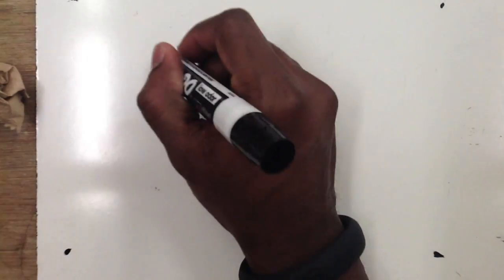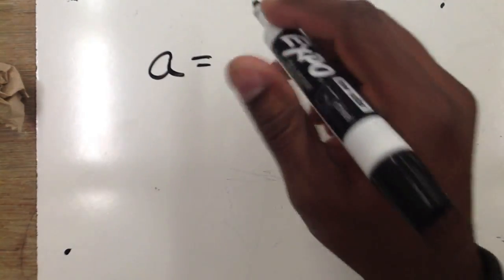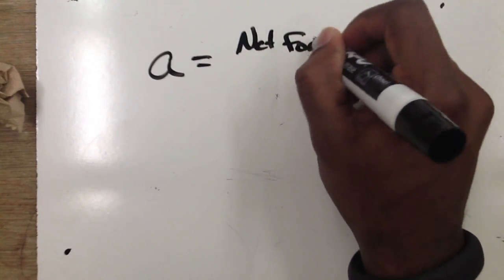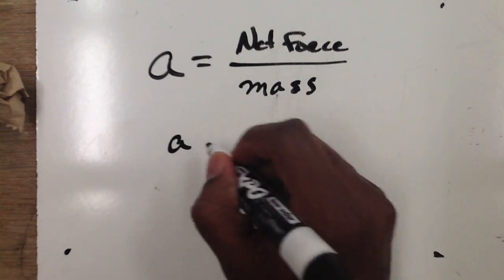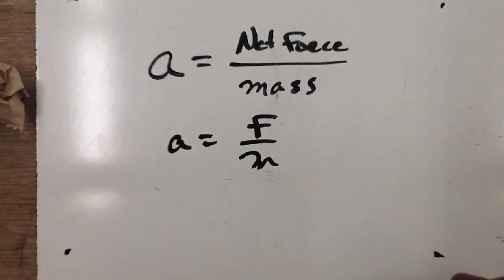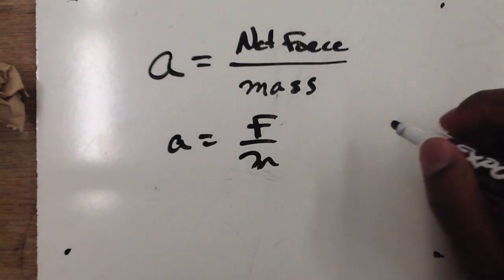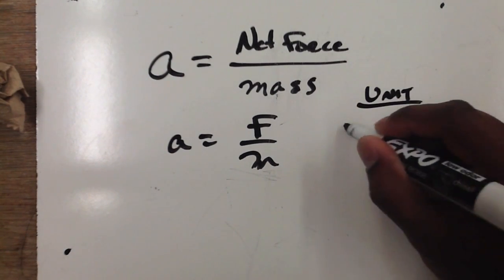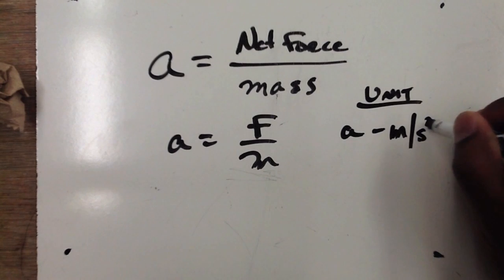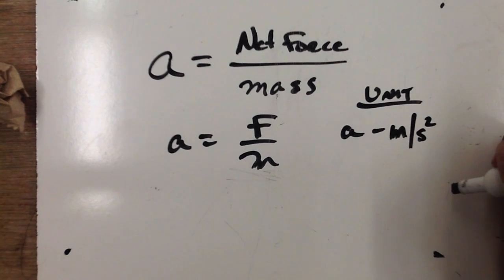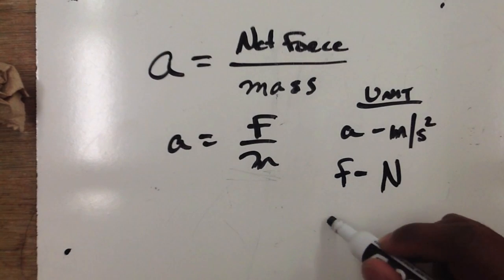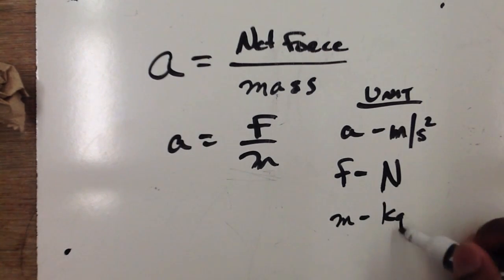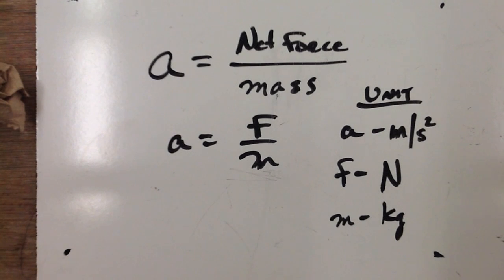This brings us to Newton's second law of motion, which states that the acceleration of an object is equal to the net force acting on that object divided by the mass of the object. You'll often see it written as a = F/m. The units for acceleration are meters per second squared. If you're looking for force, you already know that force is measured in newtons, and mass is measured in kilograms. Watch the next video for examples of how to work problems using these formulas.